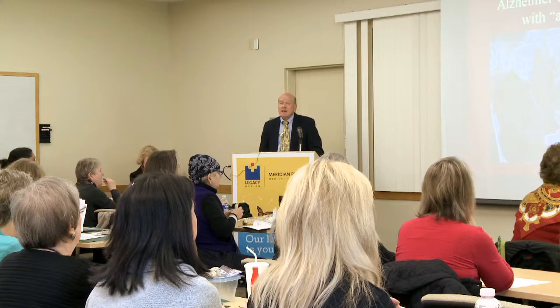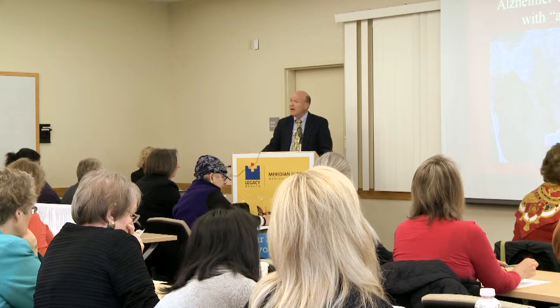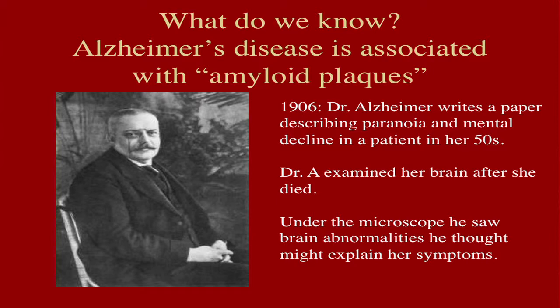One of the things that we know is that the brain of a patient with Alzheimer's disease is characterized by something called amyloid plaques. It was over a hundred years ago when Dr. Alzheimer made this observation. He saw a patient in his practice who was a middle-aged patient — she was in her fifties — and she had both paranoia and some memory problems. After many years passed, she passed away, and he had the opportunity to examine her brain. He saw some abnormalities in her brain that he thought were probably connected to the disease, and that's what we started calling Alzheimer's disease.